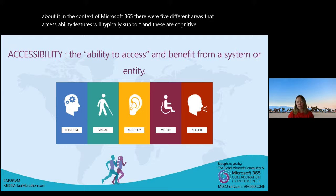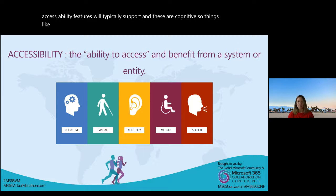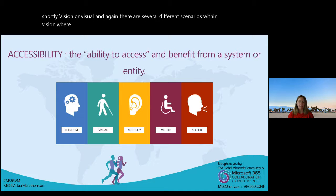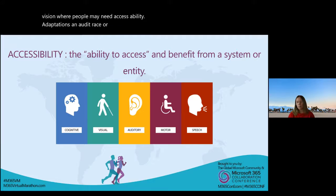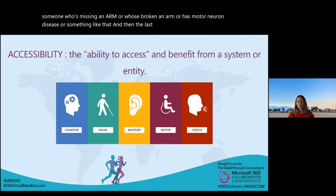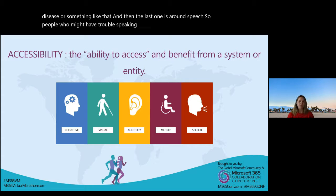Cognitive covers things like neurodiversity and mental health problems. Vision covers several different scenarios where people may need accessibility adaptations. Auditory covers hearing problems. Motor might be someone who's missing an arm, has broken an arm, or has motor neuron disease. And then speech covers people who might have trouble speaking and how we allow them to interact within an office environment.